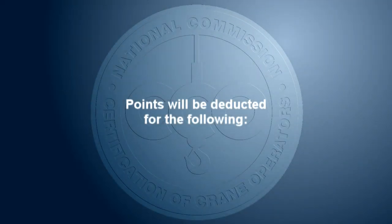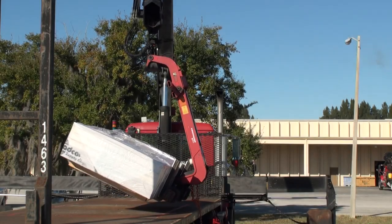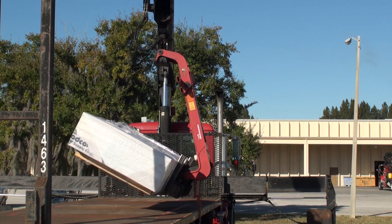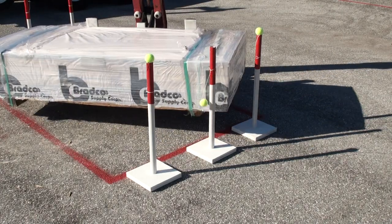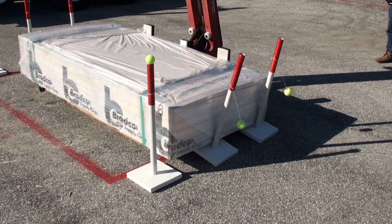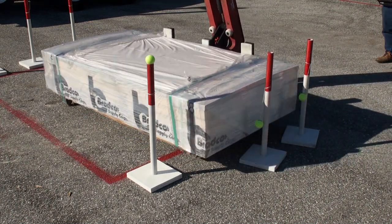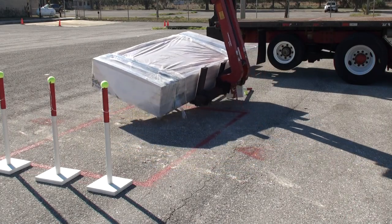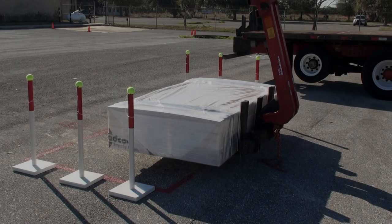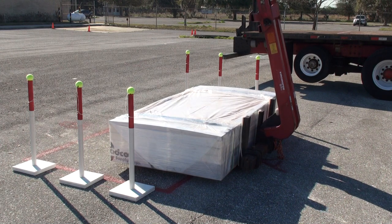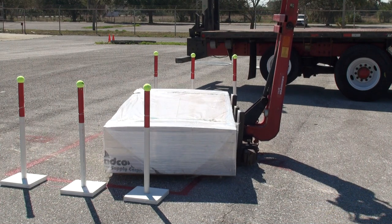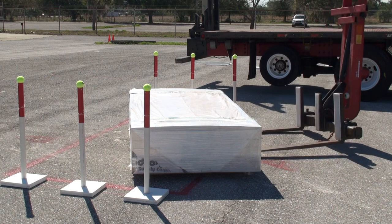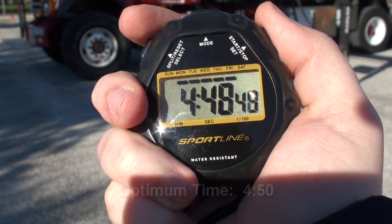Points will be deducted for the following: fork assembly not properly closed; knocking ball off pole; knocking ball base off line; knocking ball over; test weight touching ground or truck outside of the designated areas; test weight left outside of the designated area; exceeding optimum time.